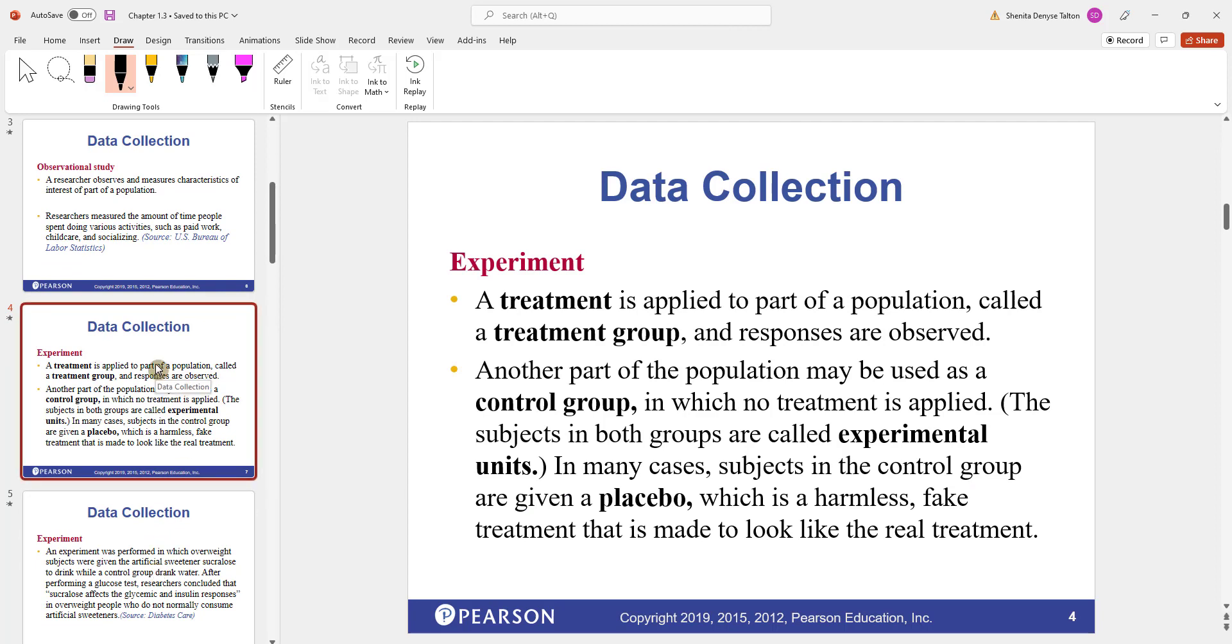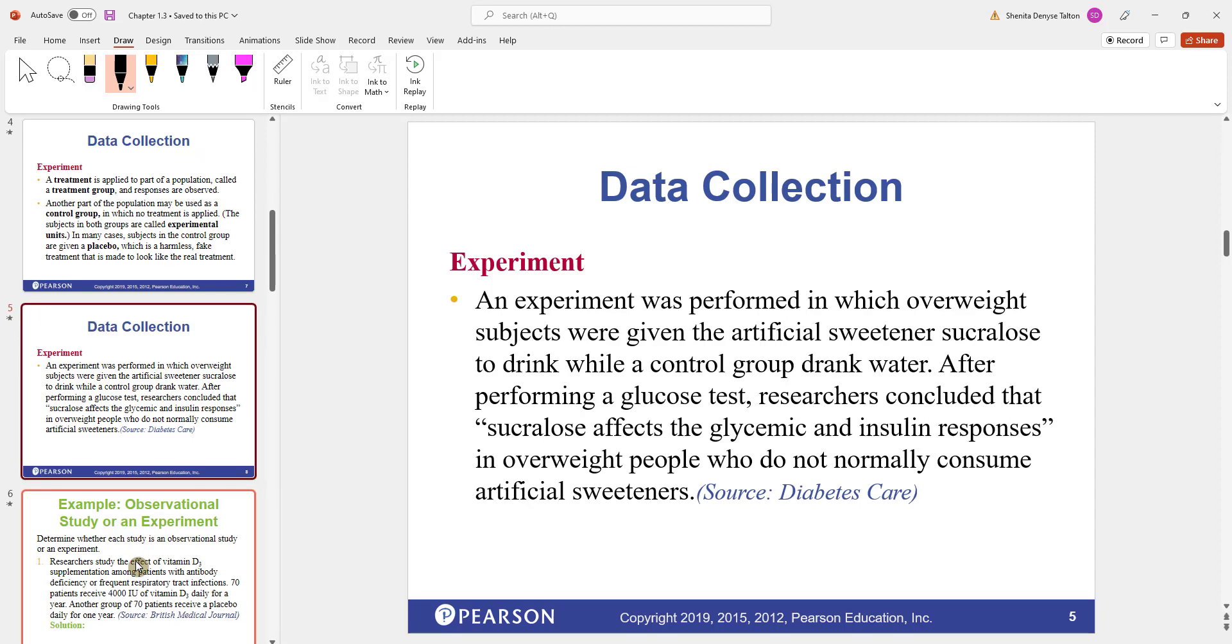A treatment is applied to part of a population called a treatment group, and responses are observed. Another part of the population may be used as a control group, in which no treatment is applied. The subjects in both groups are called experimental units. In many cases, subjects in the control group are given a placebo, which is a harmless fake treatment that is made to look like the real treatment. All of this is done in an experiment. In an observational study, you just observe the participants, whereas in an experiment, you apply some type of treatment and then observe the outcomes.